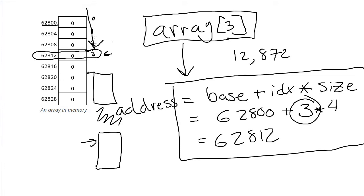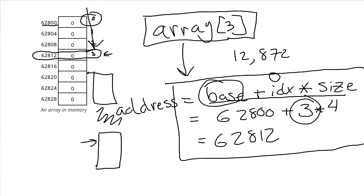This is also why arrays start at index zero. That maybe seemed weird to you when you first got into coding — that arrays start at zero instead of one, which is how we more naturally count things — but it's because of this formula. If you want the first element, it's stored directly at base plus no offset at all. If you start counting at one, then you're going to miss this first element. So that's kind of where that comes from as well.